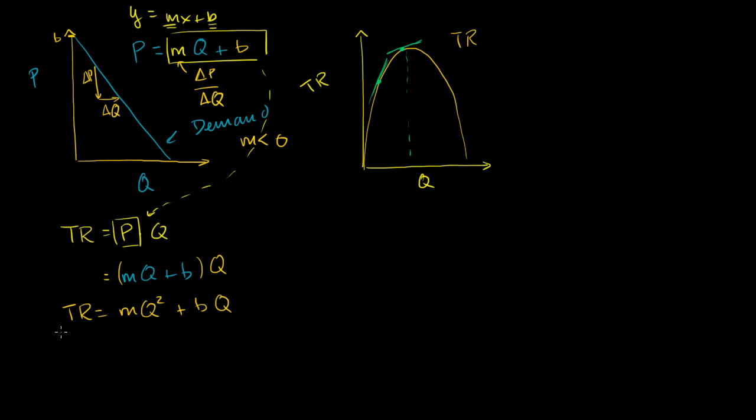So we get d total revenue over dq. So how much does total revenue change with a very, very small change in quantity, an infinitely small, infinitesimal change in quantity? And this comes straight out of calculus. m is a constant. q squared, the derivative of q squared with respect to q, is 2q. So it's going to be 2q times the constant. So it's going to be 2mq. And then b is a constant. We're assuming it's given. b is a constant. The derivative of bq with respect to q is just going to be b. It's just going to be b.